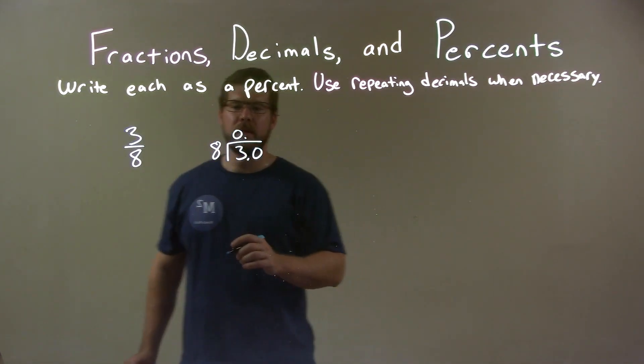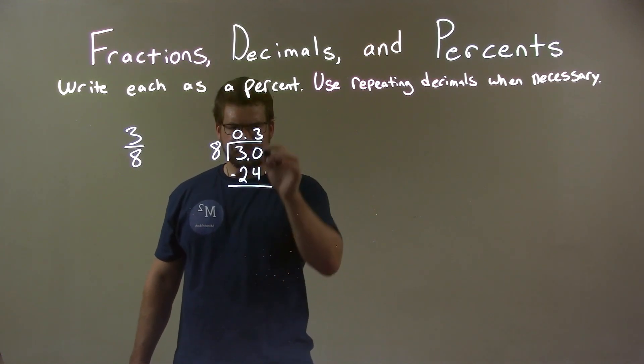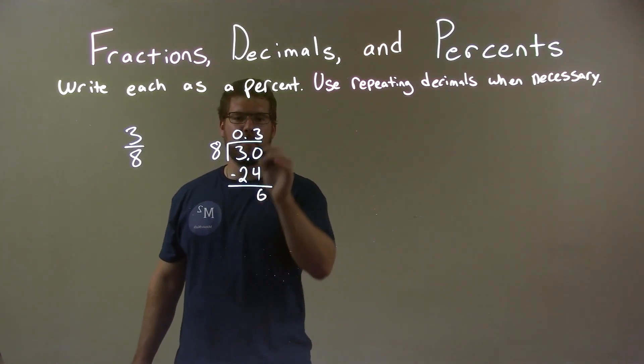Make a decimal place. Eight goes into 30 three times. Three times eight is 24. We subtract this and we get six. 30 minus 24 is six.